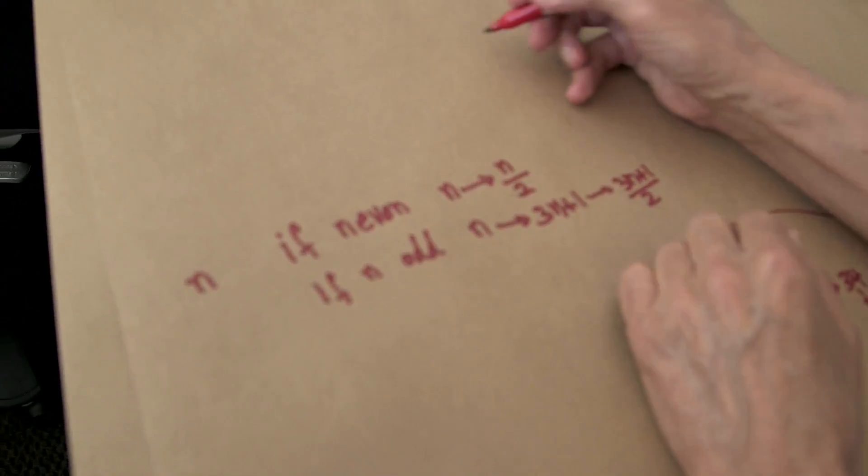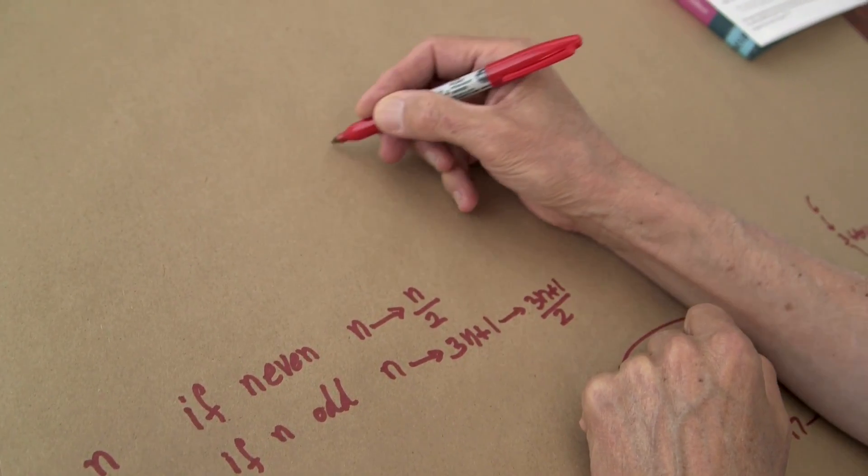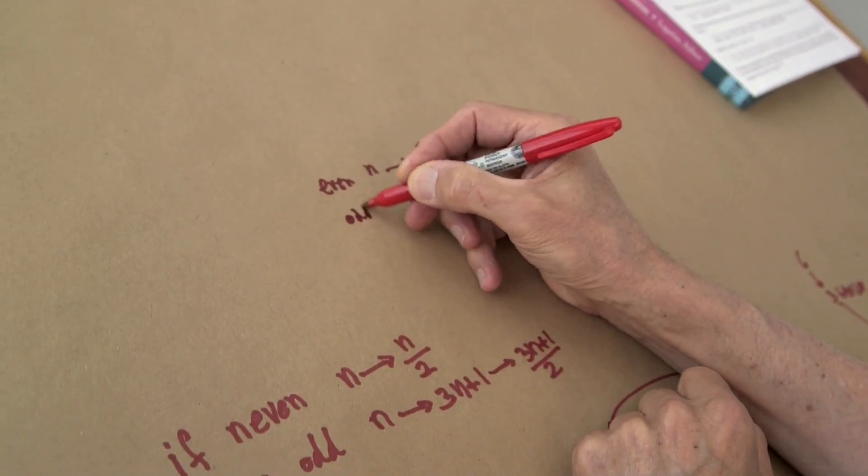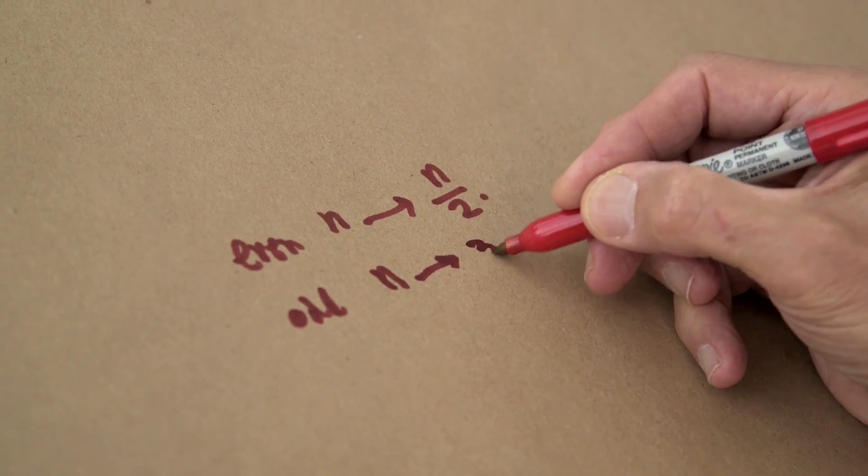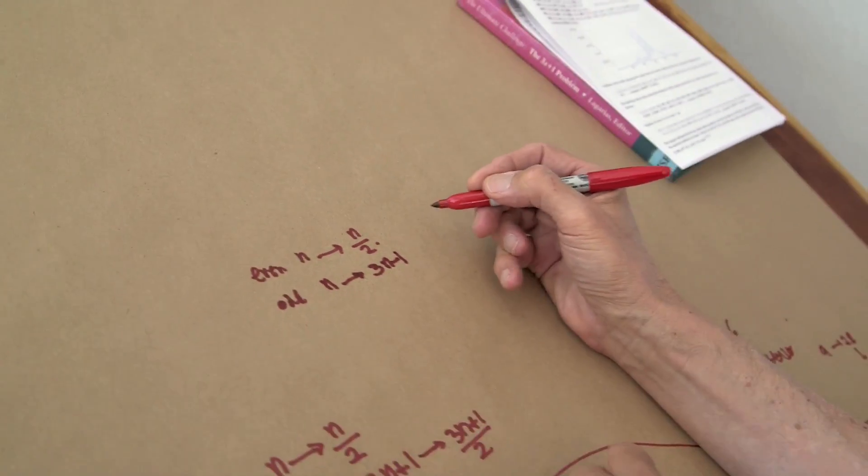Now we're going to change our idea. When it's even, again, we're going to divide by 2, just as before. But when it's odd, we're going to make a tiny change. Instead of going from n to 3n plus 1, we're going to go to 3n minus 1. Big deal. Must be the same kind of thing.